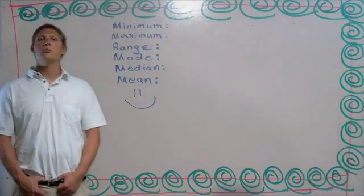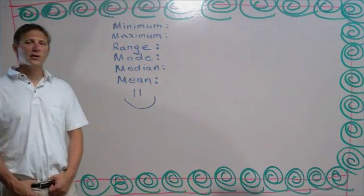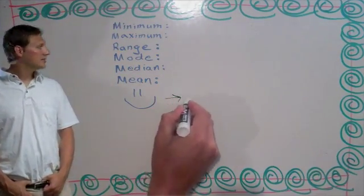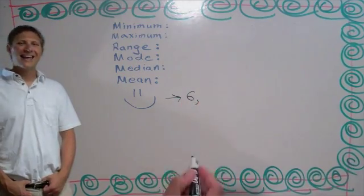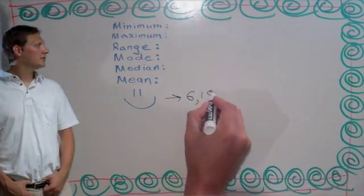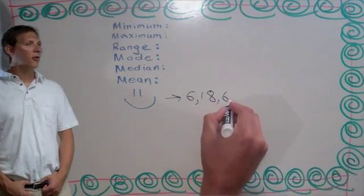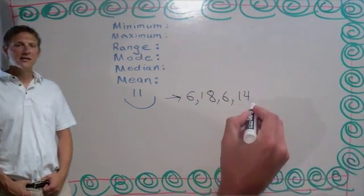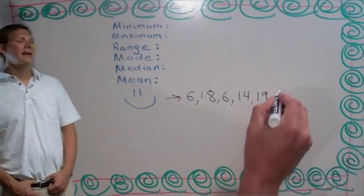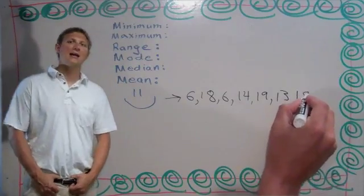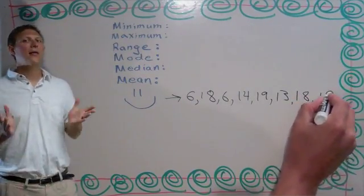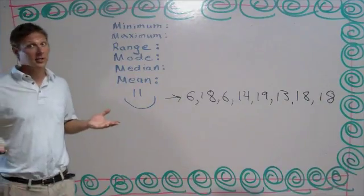To help us understand, let's begin by using the following set of data: 6, 18, 6, 14, 19, 13, 18, and 18. Now that we have our numbers, let's begin.